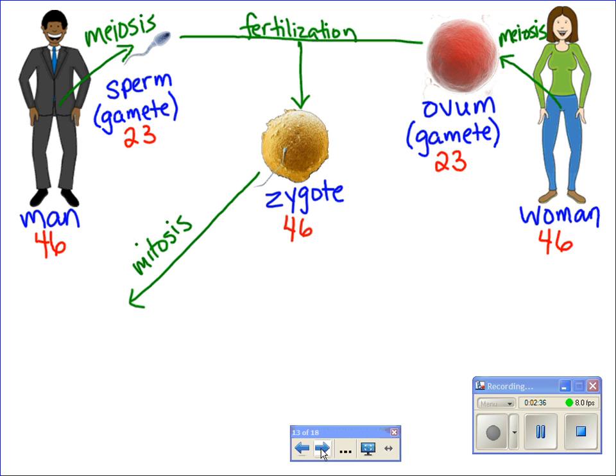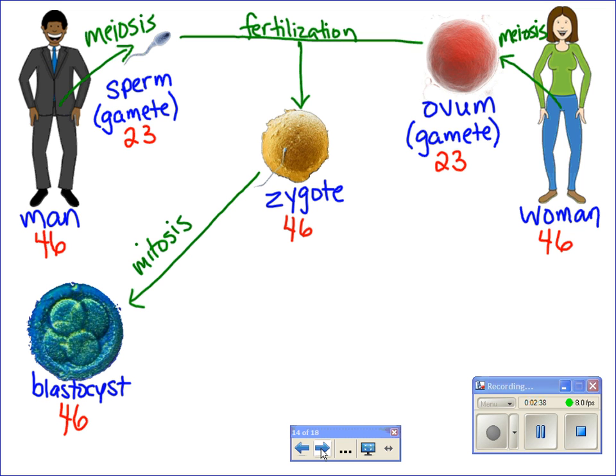The zygote goes through a few mitotic divisions, and it becomes a blastocyst, which is made up of 2, 4, 8, 16, 32 cells, etc. Each of those cells contains 46 chromosomes.